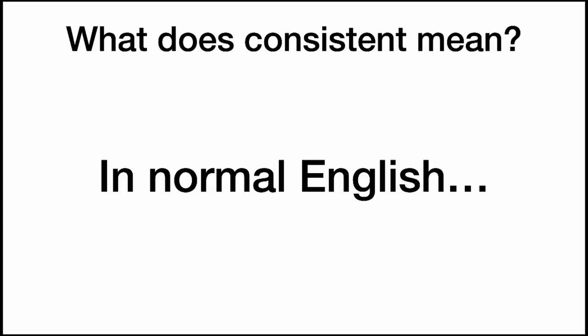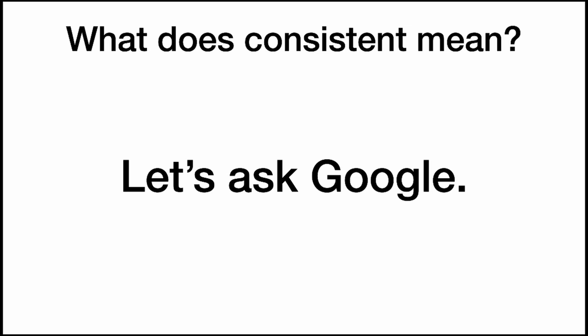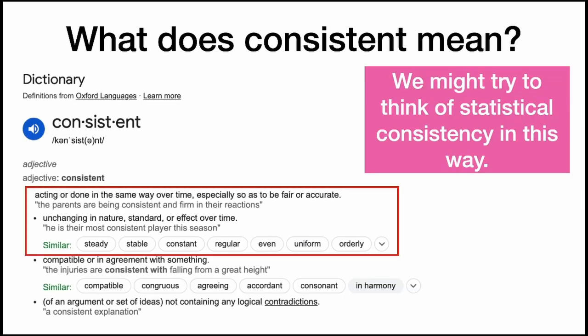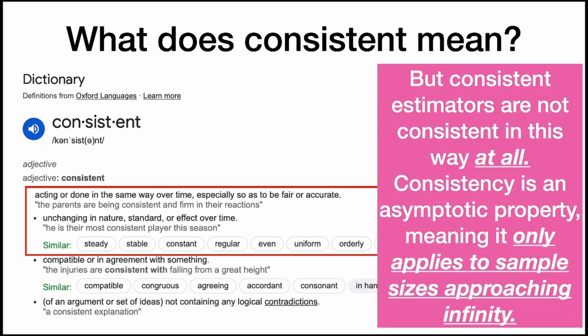What does consistent mean? In normal English, let's ask Google. Consistent: acting or done in the same way over time, especially so as to be fair or accurate. That sounds like something good for a statistical estimator to have — unchanging in nature, standard, or effect over time. However, consistent estimators are not really consistent in this way at all.